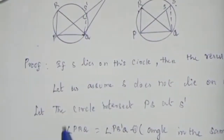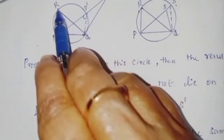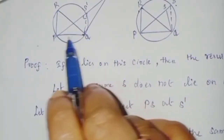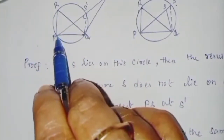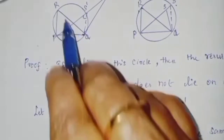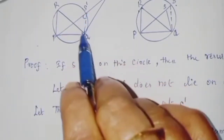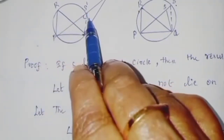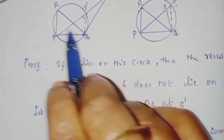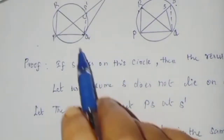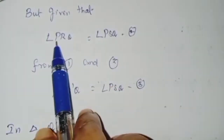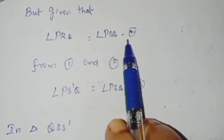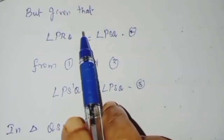Now, angle PS'Q is a common line segment angle. Since P, Q, R, S' are concyclic, angle PS'Q equals angle PRQ — this is the first equation. But given that angle PRQ is equal to angle PSQ — this is the second equation, the theorem condition.